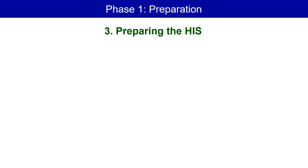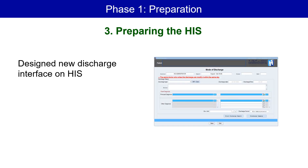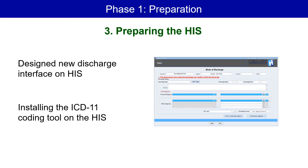The third step is preparing the hospital information system. Based on what we saw in the first step and our discussions with the team from Farwaniya Hospital, we designed a new discharge interface on the hospital information system. This was done to organize the way the final diagnoses were documented into one principal diagnosis and several other diagnoses. This includes two types of documentation: a free text field and an ICD-11 field. Then the IT team installed the ICD-11 coding tool on the hospital information system.